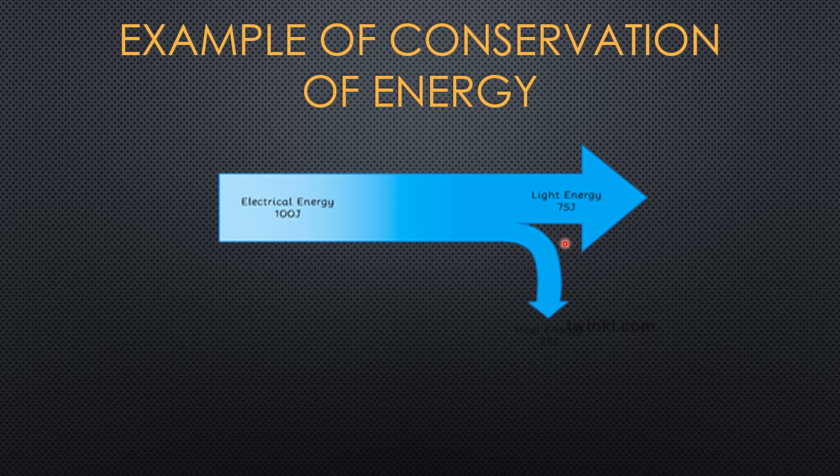We all know that when you put on a light in a room, eventually the room will start to warm up, meaning some of the electrical energy was converted into light energy. If you are asked how much of the energy was lost as heat, it's simple: 100 minus 75 joules gives you 25 joules, which was lost as heat.